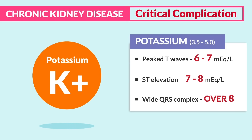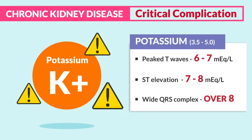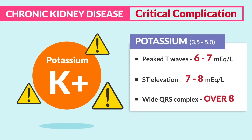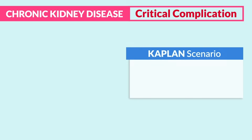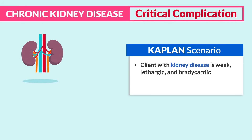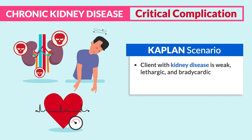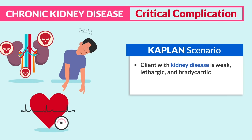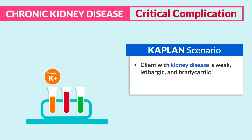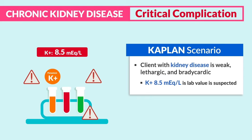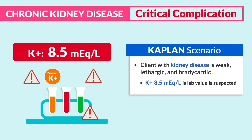That's why potassium is priority on the NCLEX — it pumps the heart muscles. A Kaplan scenario: a client with kidney disease is very weak, lethargic, and bradycardic. Key terms here are kidney disease with weakness, lethargy, and that low heart rate — automatically think potassium. A suspected lab value would be potassium of 8.5.